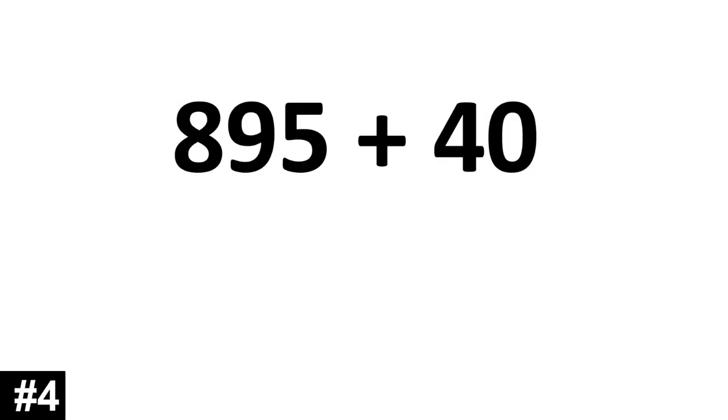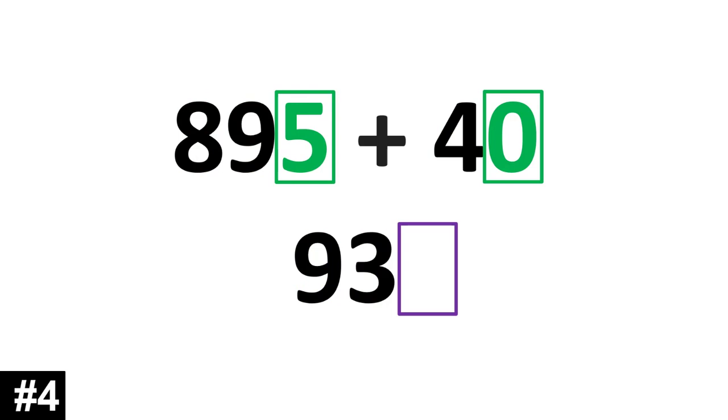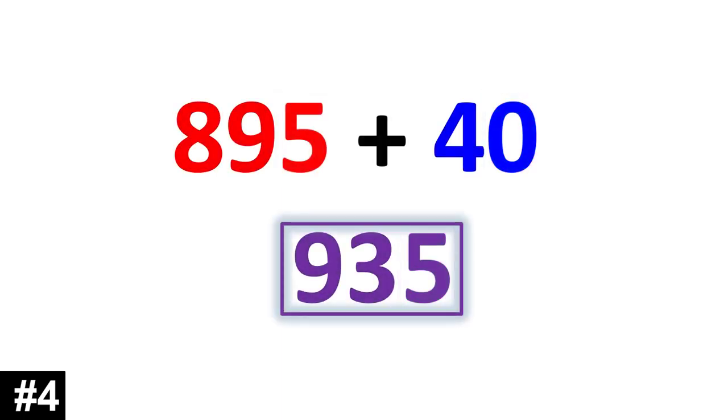895 plus 40. 895 has 89 tens. 40 has 4 tens. 89 plus 4 is 93. We look to the ones, and 5 and 0 is 5. So, 895 plus 40 is 935.